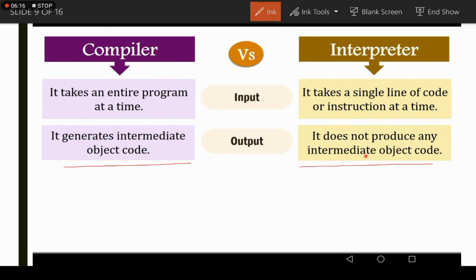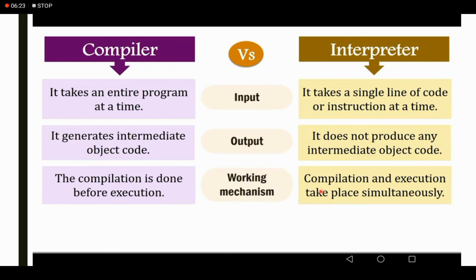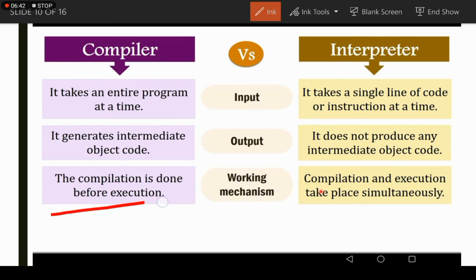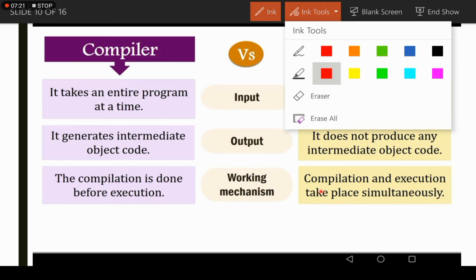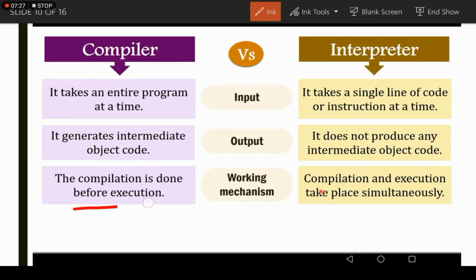The interpreter does not produce any intermediate object code, so it does not need memory for that. Regarding completion and execution: in the compiler, compilation is completed before execution. In the interpreter, completion and execution take place simultaneously — that is, the interpreter translates and executes code line by line, while the compiler compiles the whole program at once and then executes it.